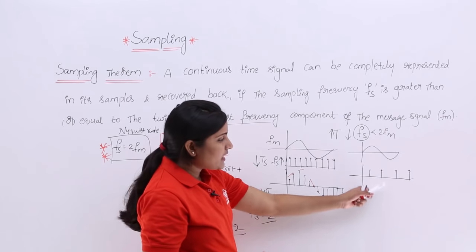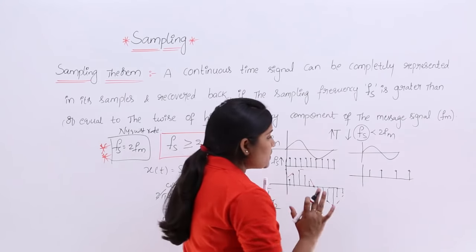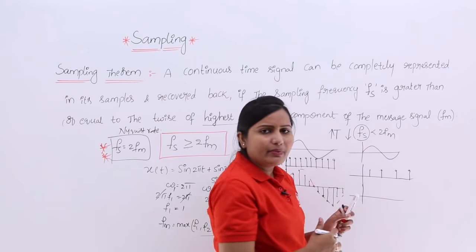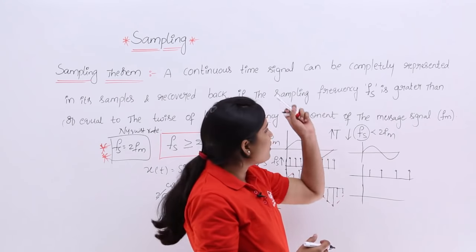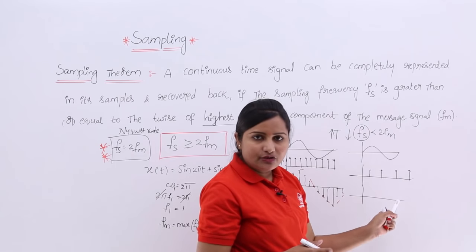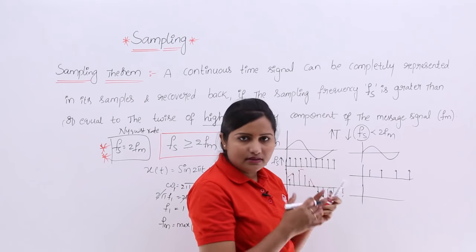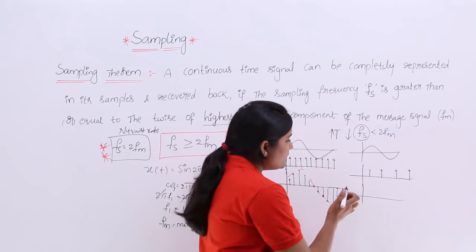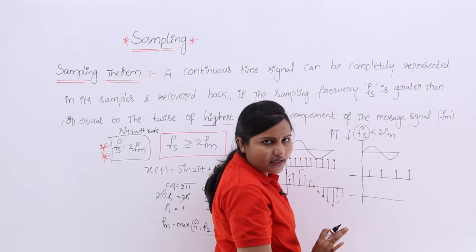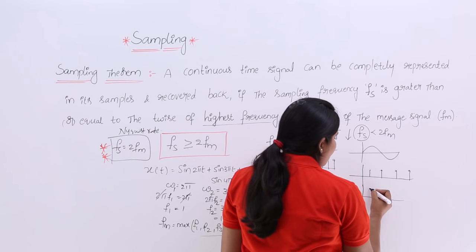If you use the lower sampling frequency and perform the same sampling process — multiplying the signal with the pulse train — you get discrete samples. But you get fewer samples because the time period is high and the rate of repetition is low.